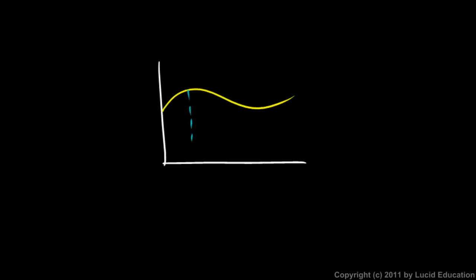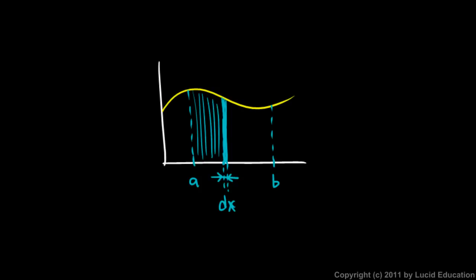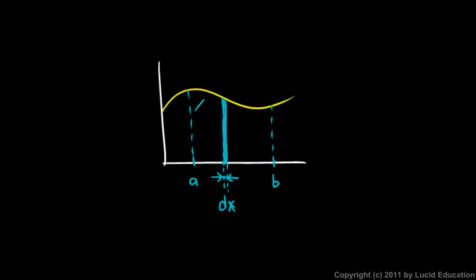That looks like this. We draw the curve and try to find the area from A to B. The calculus approach is to make a really thin vertical strip. The horizontal width of that strip is infinitely thin — we call that width dx. There are an infinite number of those strips. I can draw a few to represent that. The sum of all those areas is the total area under the curve. So I think of the definite integral as the sum of an infinite number of infinitely small vertical strips of area.